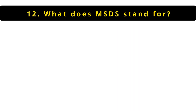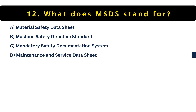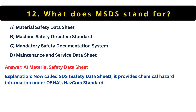Question 12: What does MSDS stand for? Option A: Material Safety Data Sheet. Option B: Machine Safety Directive Standard. Option C: Mandatory Safety Documentation System. Option D: Maintenance Service Data Sheet. A is correct. Though it's now called SDS — Safety Data Sheet — these documents provide required information under OSHA's Hazard Communication Standard.